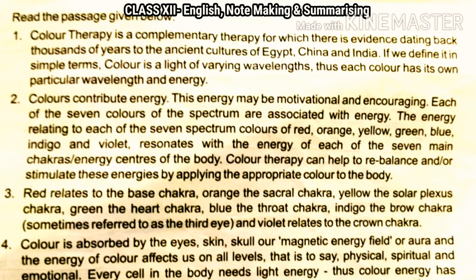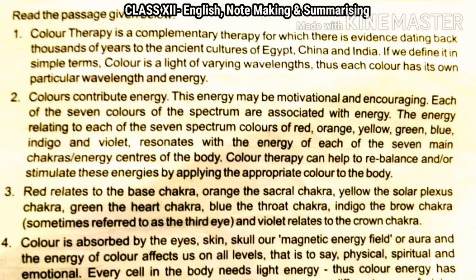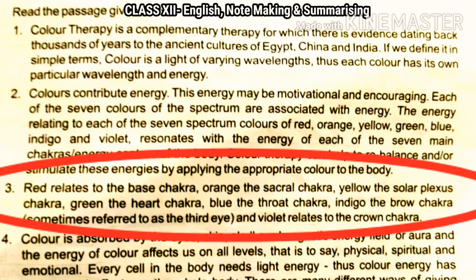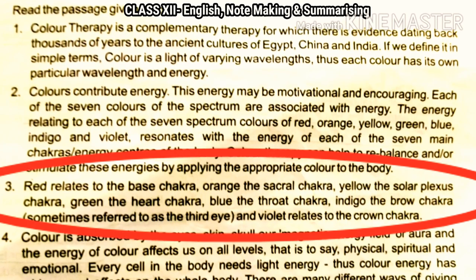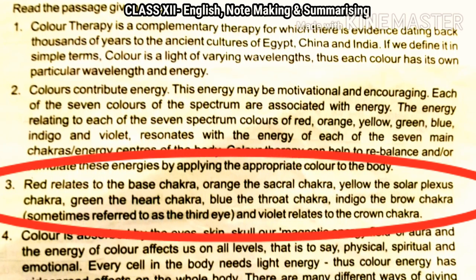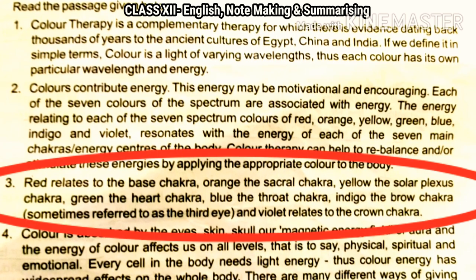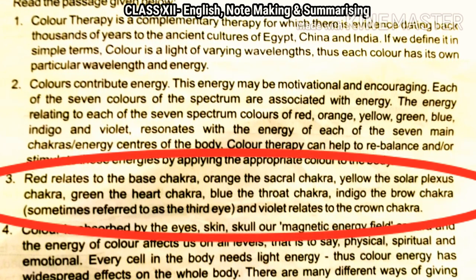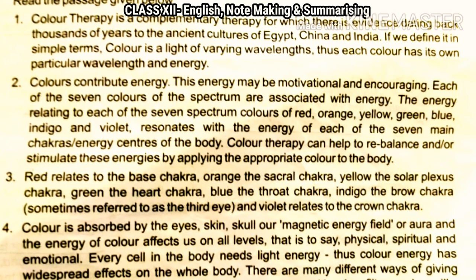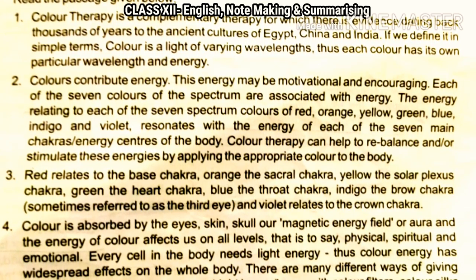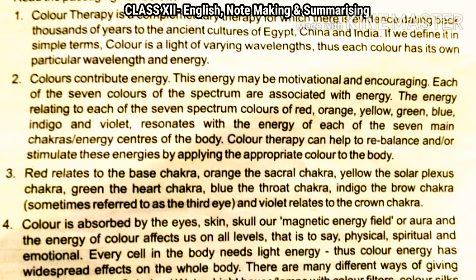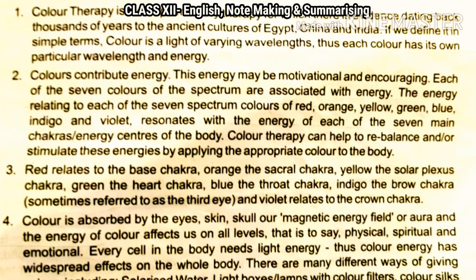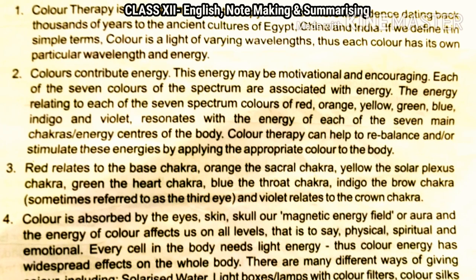Then we move on to the third paragraph, which talks about the different colors and their relation to the different chakras. Red relates to the base chakra, orange the sacral chakra, yellow the solar plexus chakra, green the heart chakra, blue the throat chakra, indigo the brow chakra — sometimes referred to as the third eye — and violet relates to the crown chakra. So this is sub-heading number three: relation of colors with chakras. Red — base chakra, orange — sacral chakra, and so on. So we have already had three sub-headings with three or four sub-points in each.